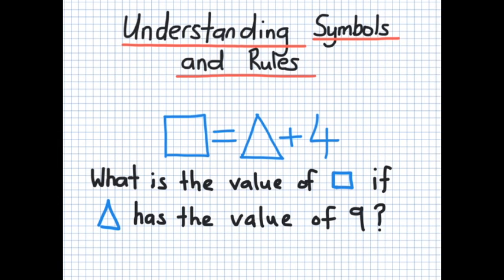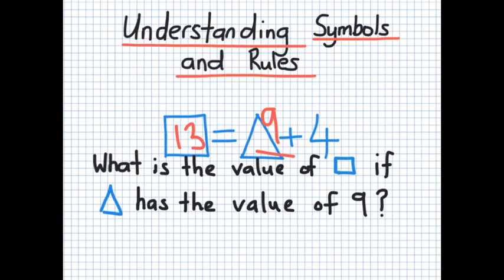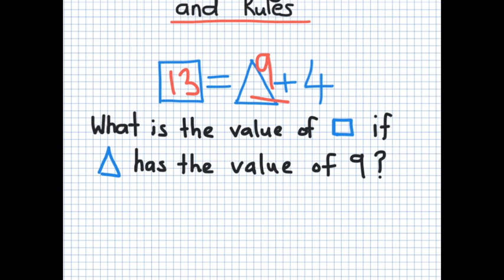Understanding symbols and rules: here we have a number sentence involving a square, a triangle, and the number four. What is the value of square if the triangle has the value of nine? Hopefully you can recognize that the value of square, if triangle is nine, will be nine plus four, which equals 13. In maths, 'therefore' is referred to by three little dots, so therefore square is equal to the value of 13.